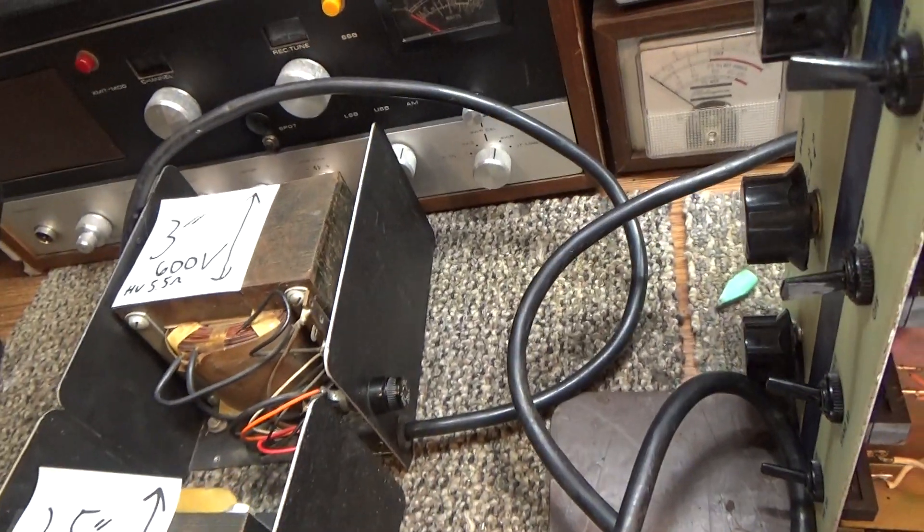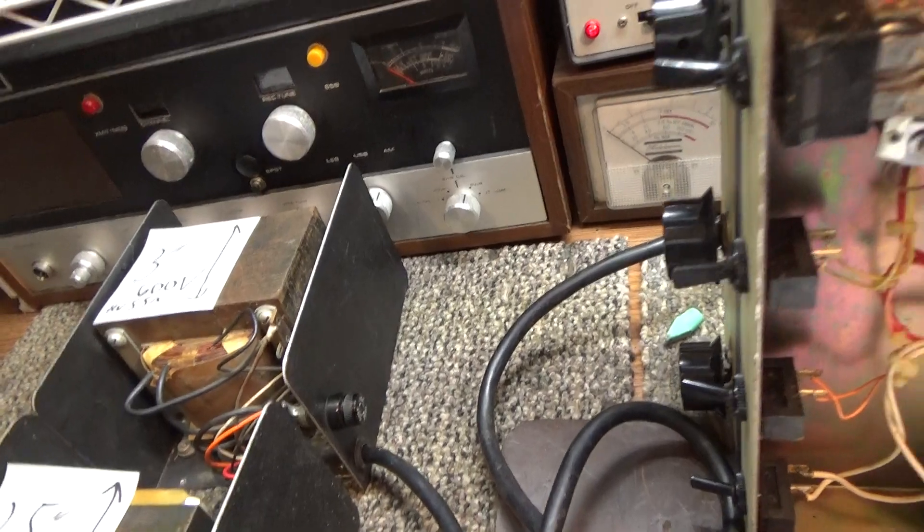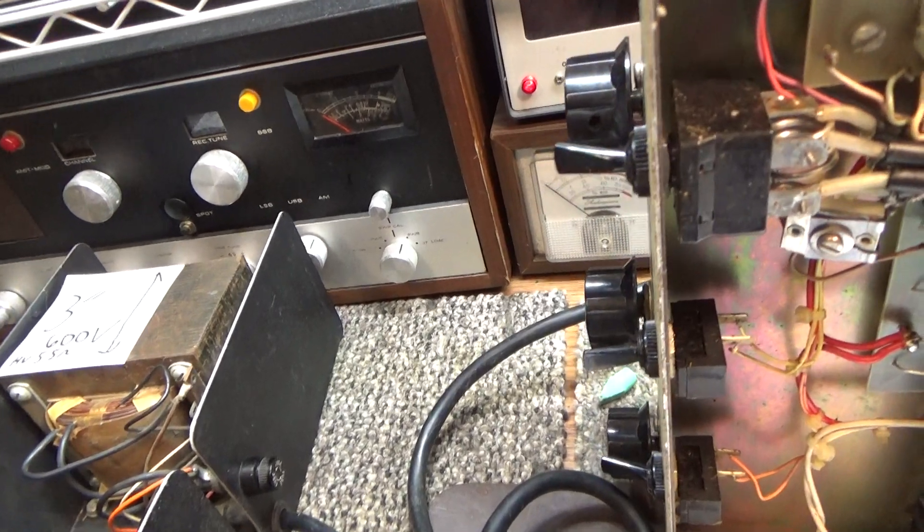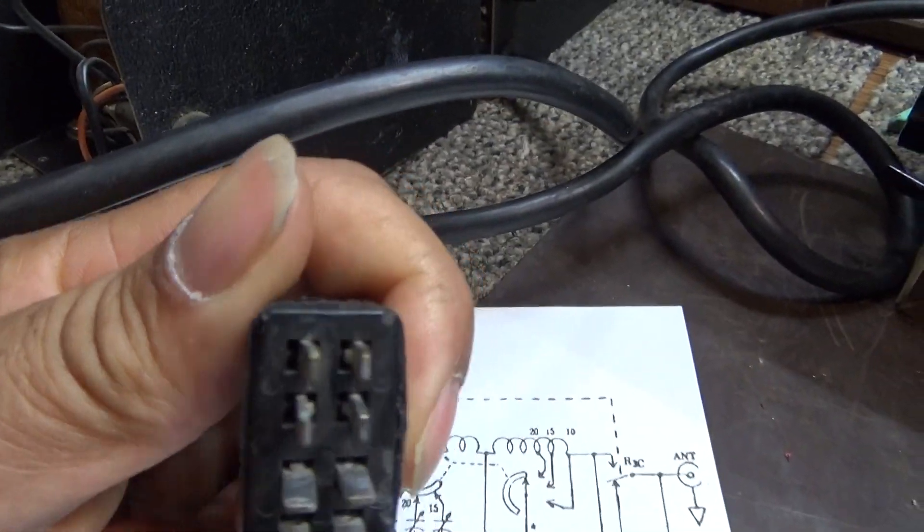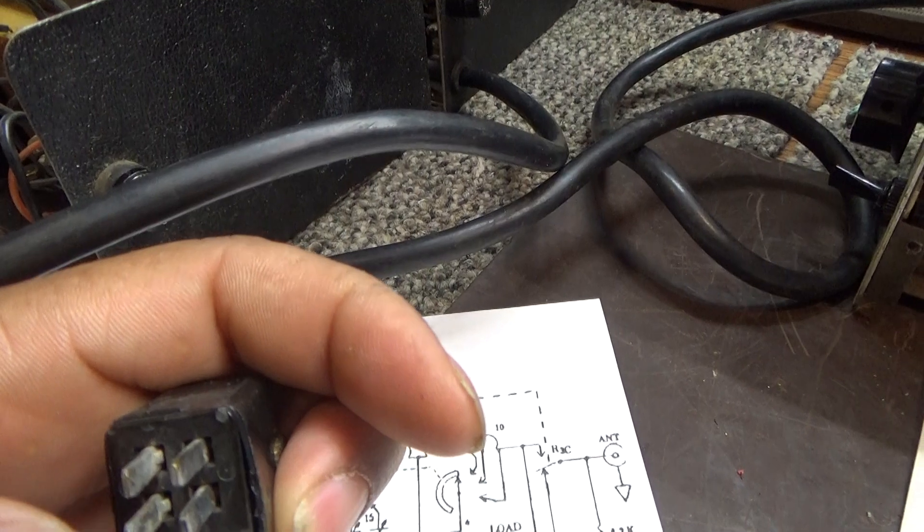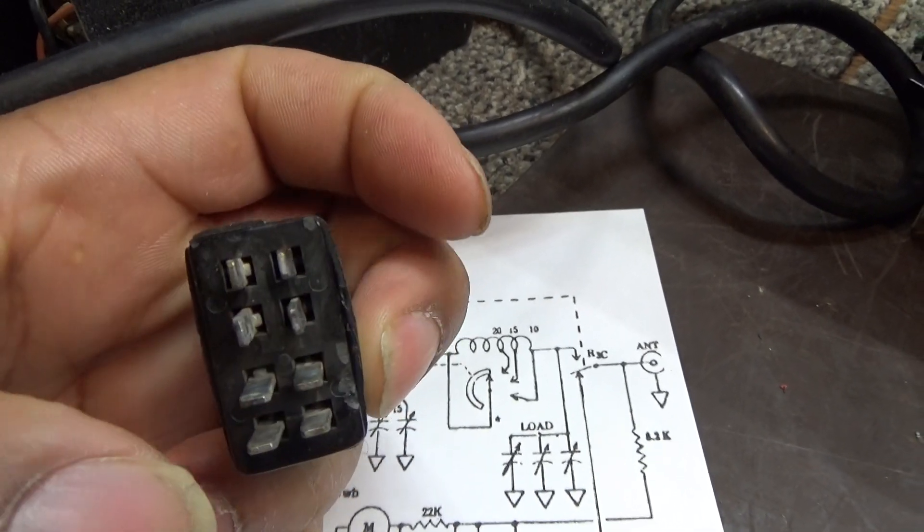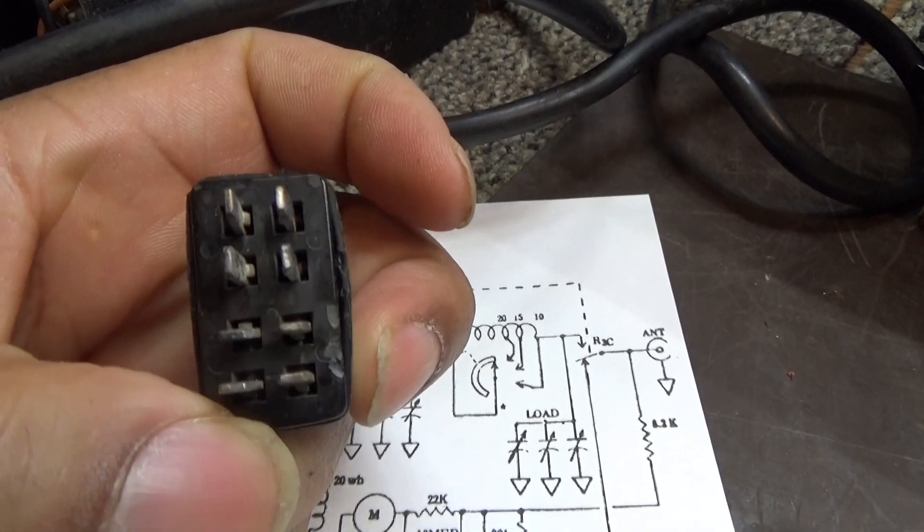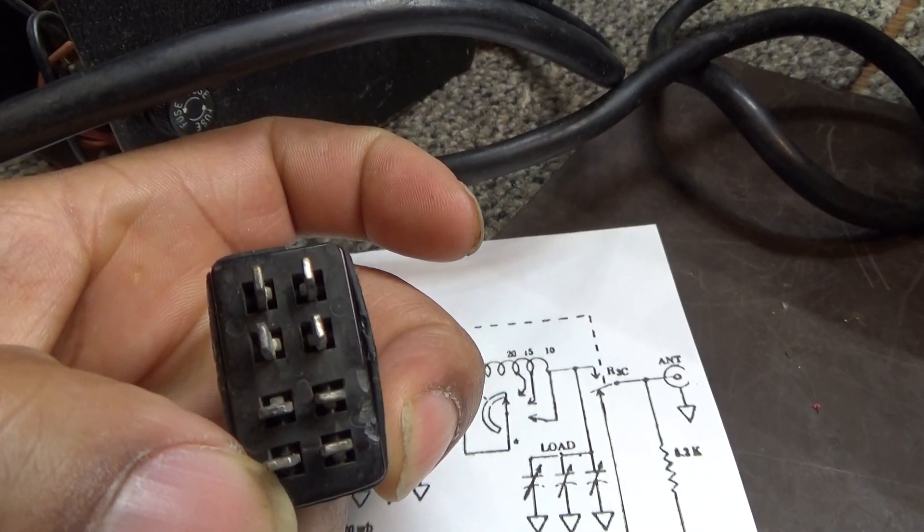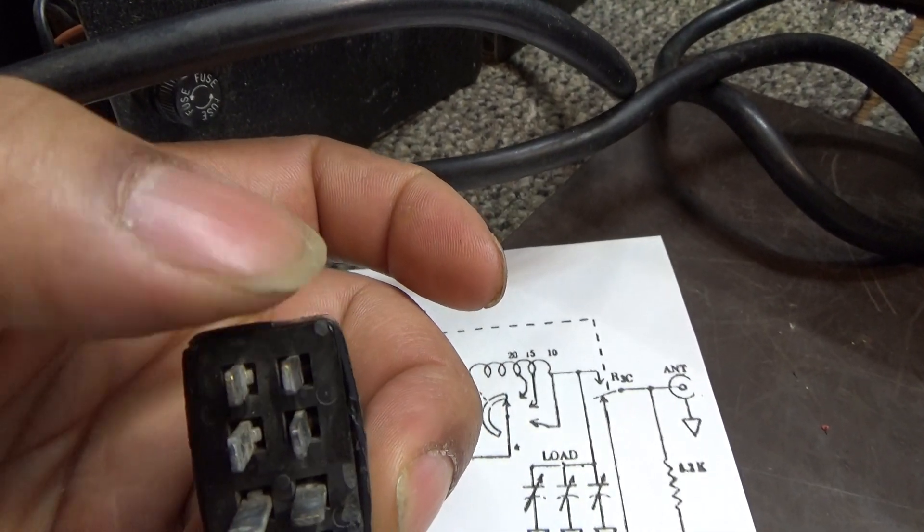An easy way to figure out which transformer you have is to measure pins five and six on the jack pins, which I did in another video. Pin five there at my thumb, second one down, and then six over here, second one down from there. This would be one, two, three, and four at the bottom, and those are tied together. One and three and two and four, and that's your low voltage high current for your filaments.